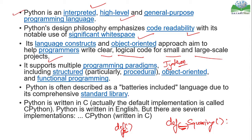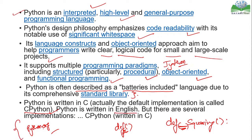Python is also described as a 'batteries included' language due to its comprehensive standard libraries. Python is written in C — the default implementation is called CPython. Whenever we download Python from python.org along with the interpreter, we are essentially downloading CPython, which is the default implementation for your OS. There are several other implementations: CPython written in C, Jython written in Java, IronPython written in .NET, and more, which we will discuss later.